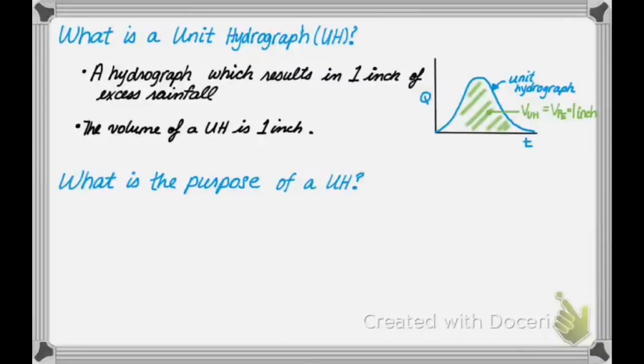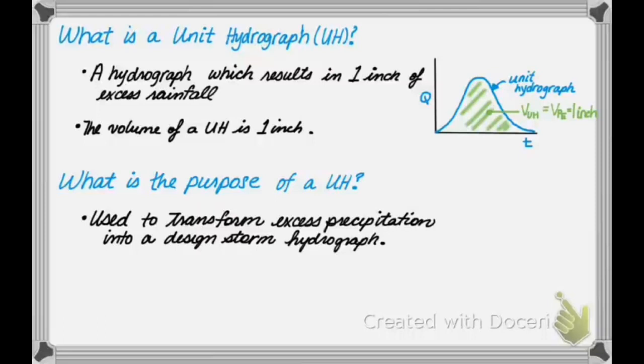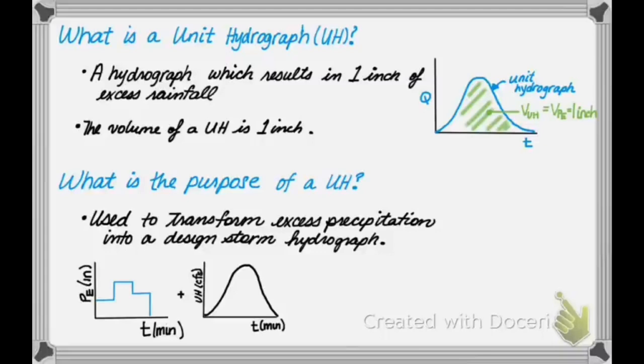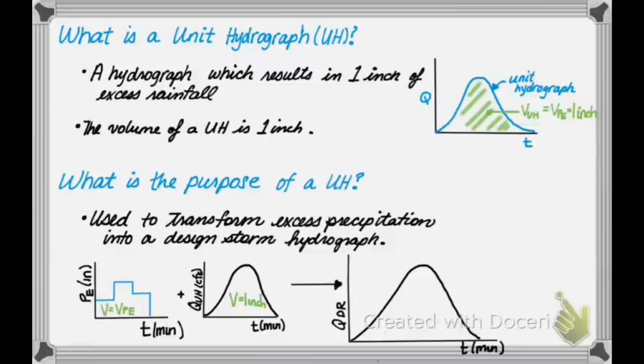So what is the purpose of a unit hydrograph? It is a transform function which converts excess precipitation into direct runoff. A unit hydrograph allows the development of a design storm hydrograph. So if you are given this hydrograph which shows excess precipitation as a function of time and you combine it with a unit hydrograph, the output would be a direct runoff hydrograph. The volume of the unit hydrograph is one inch, while the volume of the excess precipitation and direct runoff are equal. In the next series of videos, we will discuss and explain unit hydrographs and how to design direct runoff hydrographs.